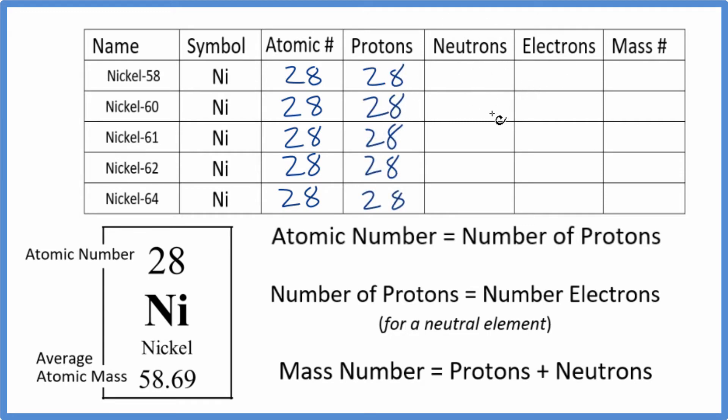We'll skip the neutrons for now and then come back to them. When we look at the electrons, on the periodic table all of the elements are neutral. That means we don't see a negative or a positive sign after them.